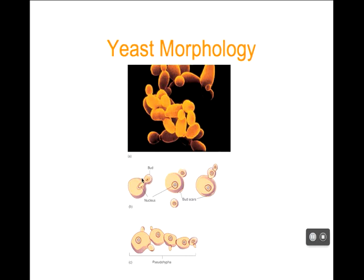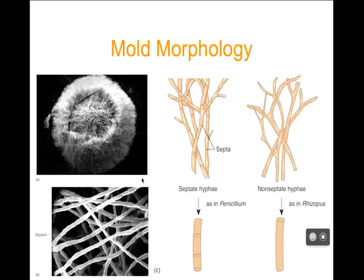For mold morphology, molds are multicellular fungi that grow on long filaments called hyphae — long, hairy strings. Here's a microscopic picture of hyphae, these long filaments. Many times you'll see a huge mass of hyphae, a great big furball of lots and lots of fungus — hyphae on top of hyphae on top of hyphae.